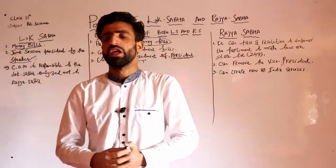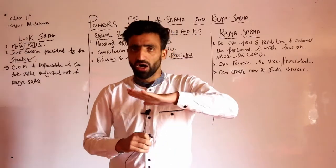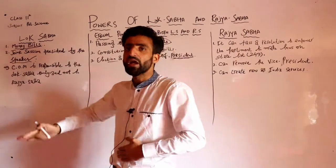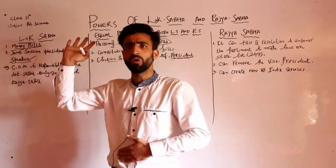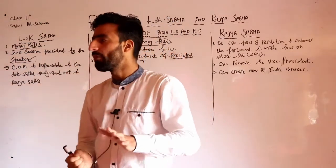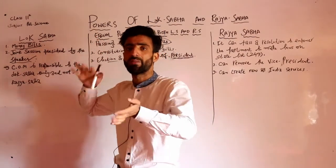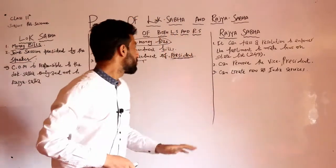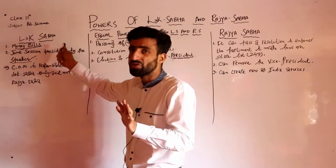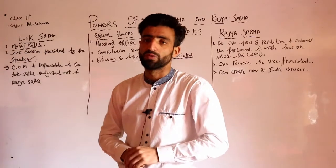But usually kya hota hai - India ki baat karein ya duniya ke har ek mulk mein - it is party based, house-wise nahin hota. For example, BJP ke members hain Lok Sabha mein bhi, Rajya Sabha mein bhi, toh unhe party whip ke directions pe chalna padta hai. So it is not the competition between Lok Sabha and Rajya Sabha practically - but theory mein hai. These all things are under the exclusive jurisdiction of Lok Sabha - these constitute special powers of Lok Sabha.